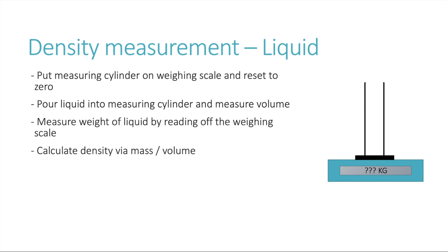Once you've added the liquid into the measuring cylinder, that liquid is going to weigh something. The weighing scale will show a number telling you how much the liquid actually weighs, giving you the mass of the liquid. You now have both key measurements needed to calculate density: the volume from the measuring cylinder and the mass from the weighing scale. Using the formula mass divided by volume, you can obtain the density of the liquid.